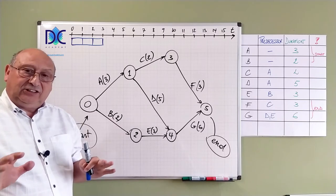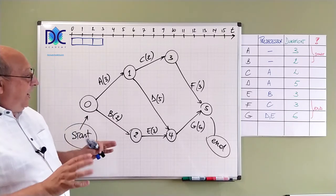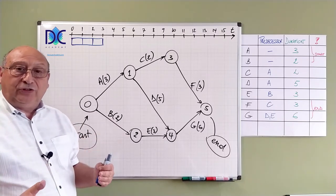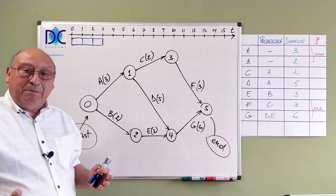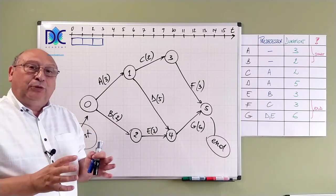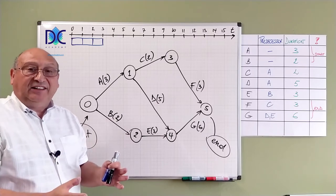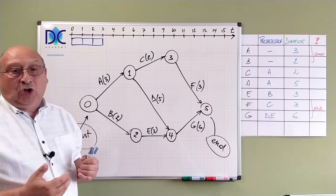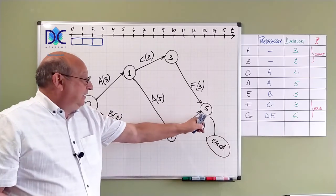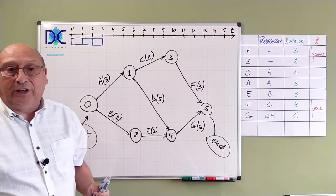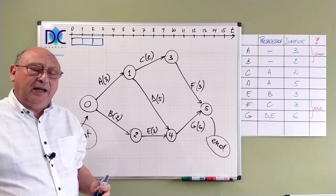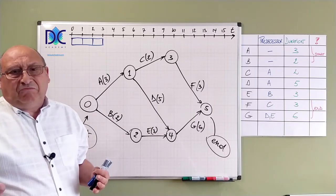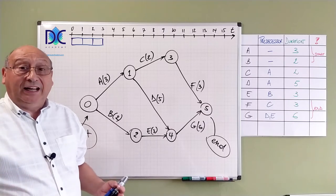And later in the next video we will see why some people who are using the precedence diagramming method try to put some event, some activity at the beginning and at the end of the project. Because they like these end points. Basically we don't need them. But basically those are also what we call milestones.